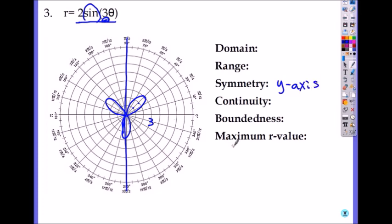The domain will be all of your numbers. And range, for this one, will be from, for any type of rose, it will be always from negative A to positive A. It can be both negative or positive. So A is this number right here, which is the length of the petal.